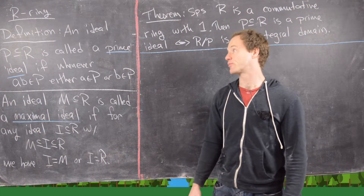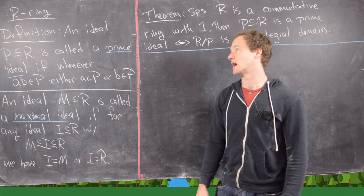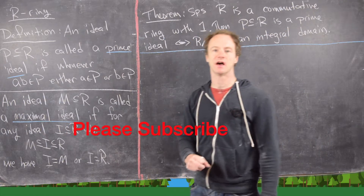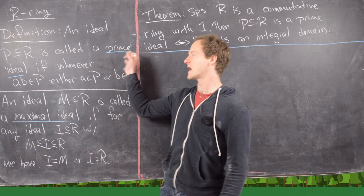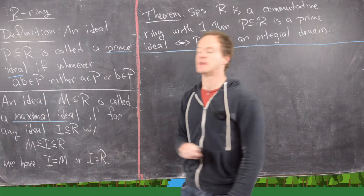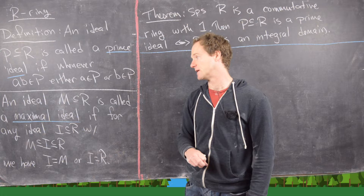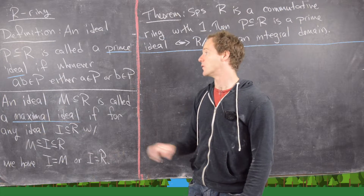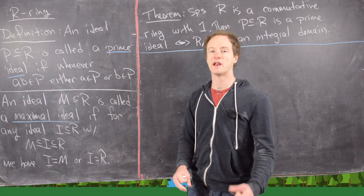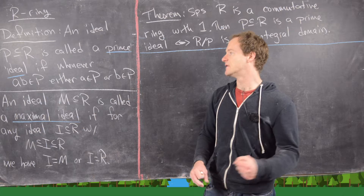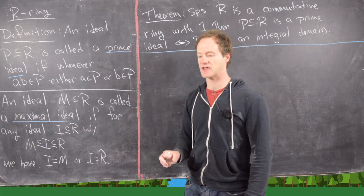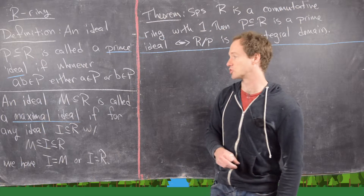In this video, we're going to look at the notion of a prime ideal and a maximal ideal. Let's set up that R is a ring. An ideal P of R is called a prime ideal if whenever A times B is inside of P, then either A is in P or B is in P. The way to think about this is like prime numbers: if P divides A times B, then P divides A or P divides B. So this is a generalization of the notion of a prime number to rings.